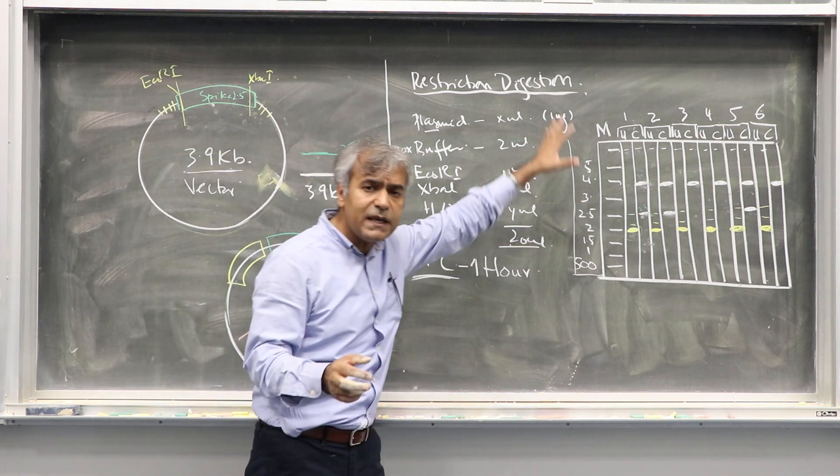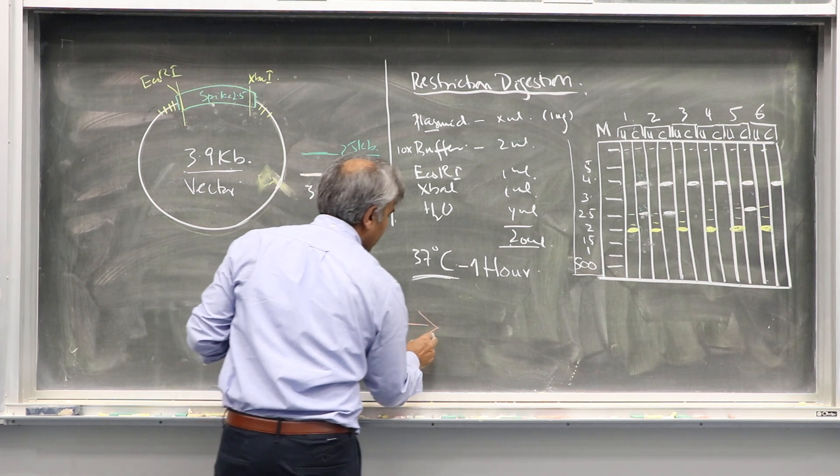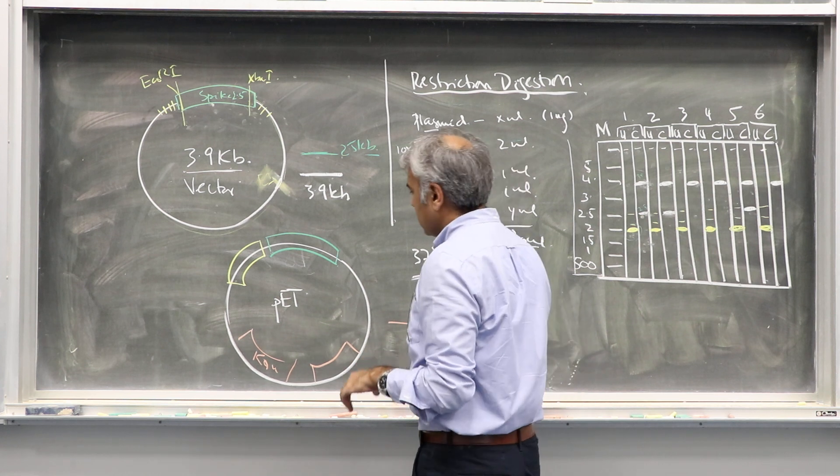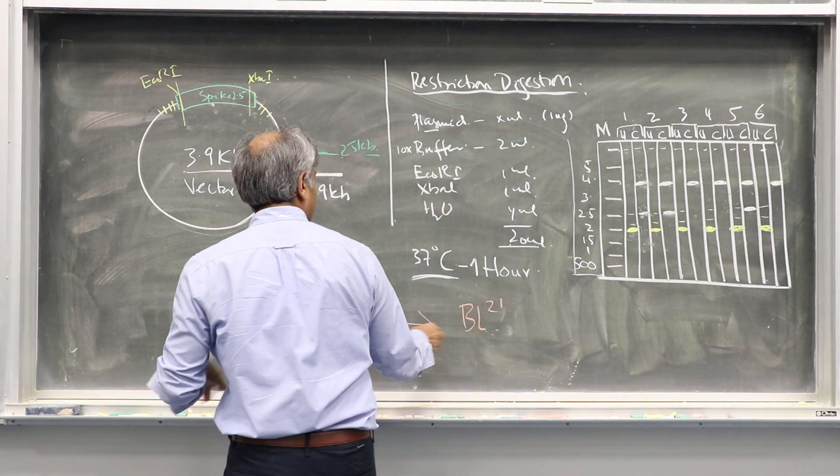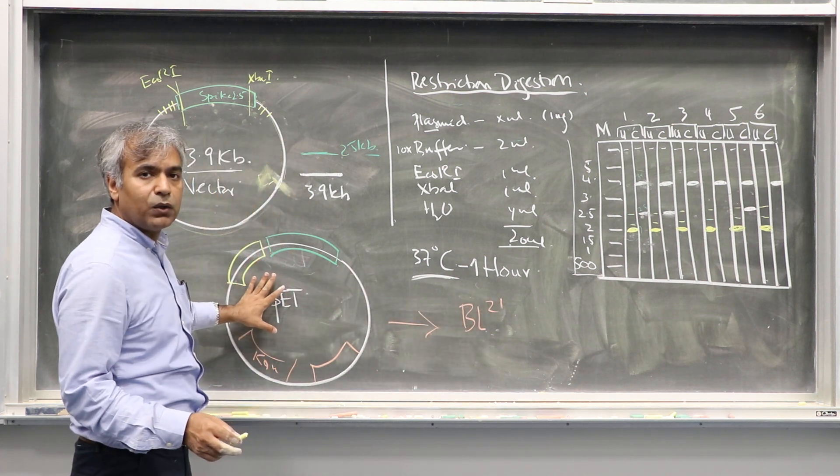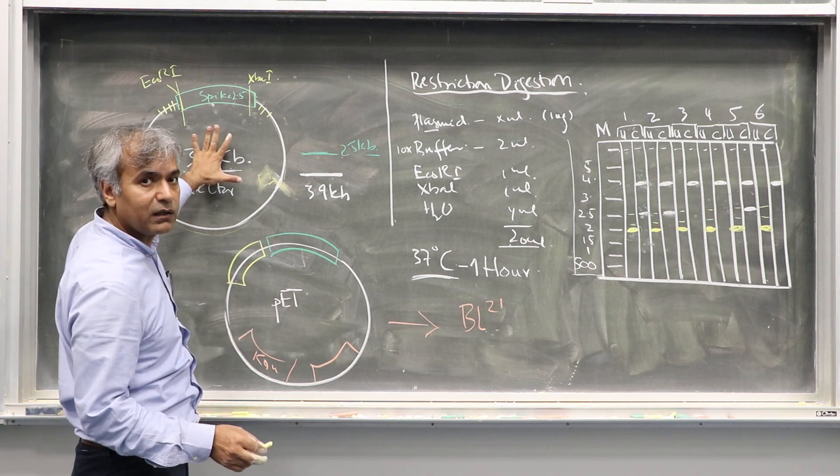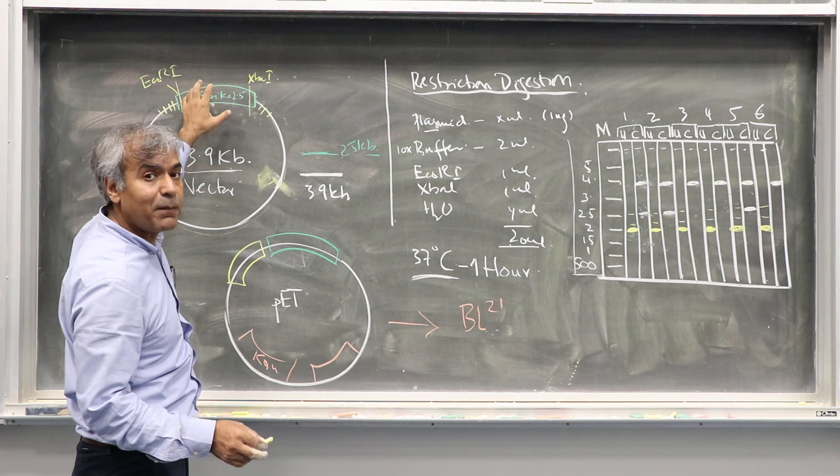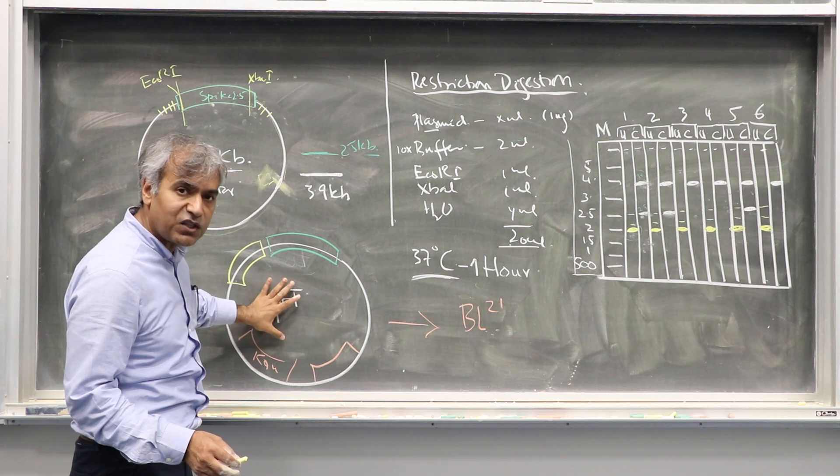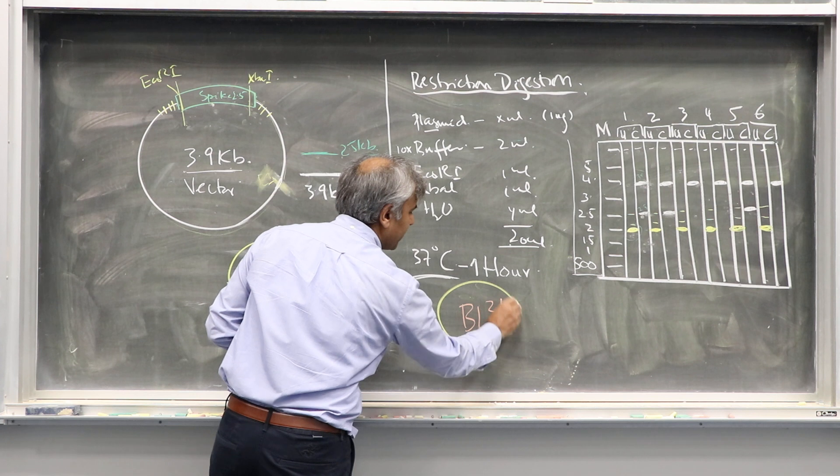Once this cloning is confirmed in normal DH5 alpha strains, normal competent cells, you will follow the same steps. Eventually, once you have this clone, you will go in a very specialized strain which is called BL21. And in this culture, when you will grow cultures of this bacteria containing your expression plasmid. This is expression plasmid now. This was general purpose cloning vector. Spike plasmids. This is spike clone in a general purpose cloning vector. This is spike expression vector. In which spike is cloned in an expression vector and transformed into BL21.